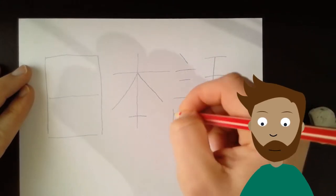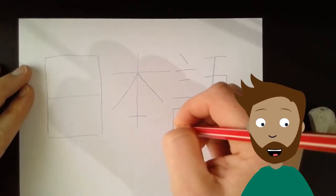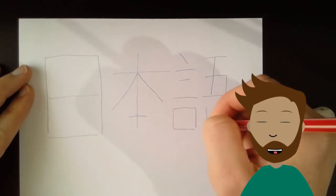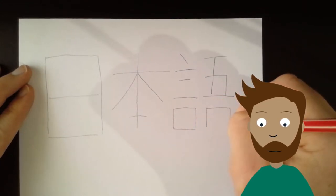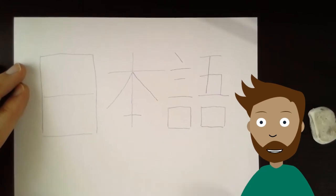The first radical means speaking. The next radical you'll recognize as Go, number five in Japanese, and the final two down the bottom are the mouth radicals.